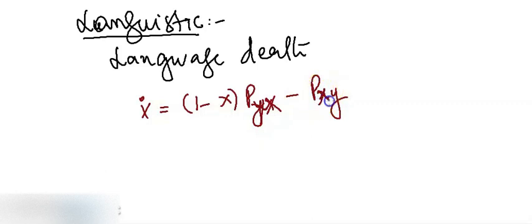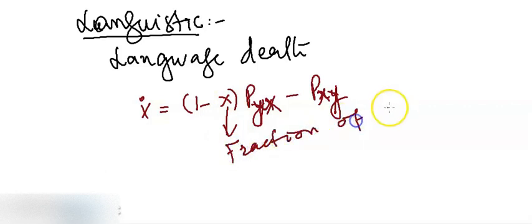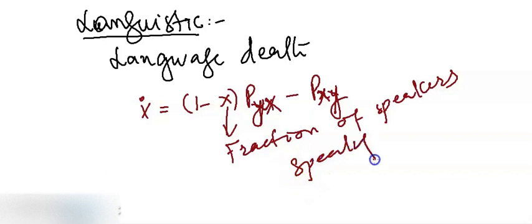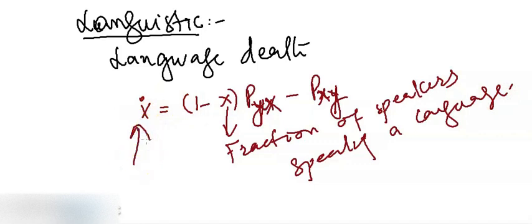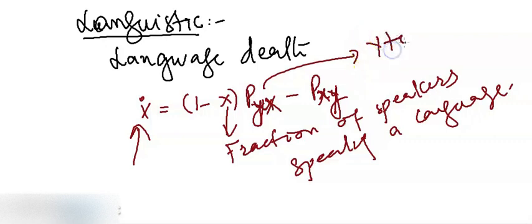Here capital X and capital Y are used, where X is the fraction of people — or maybe you call them speakers — speaking a language. How that fraction is evolving with time is given by this equation, where p(x,y) tells you about the rate at which a speaker switches from language Y to X in a given speech community. So we have seen that time-evolving systems appear in linguistics as well.